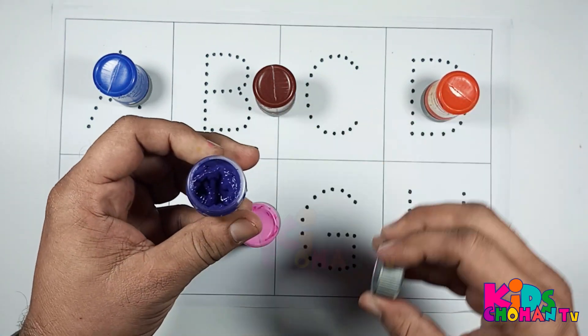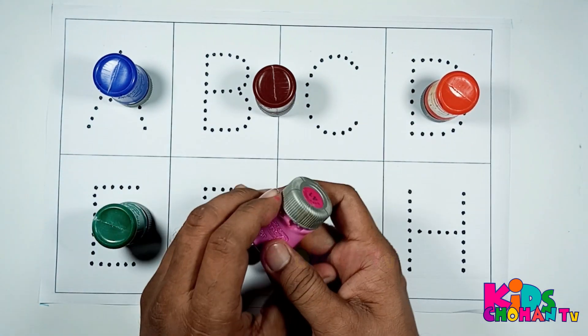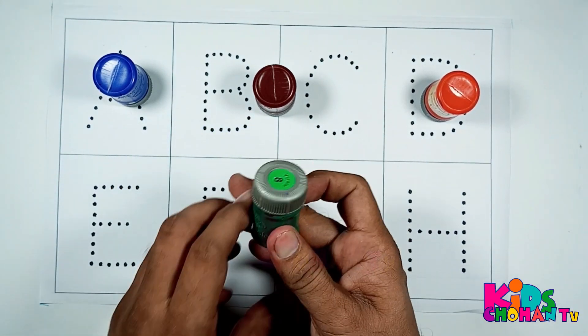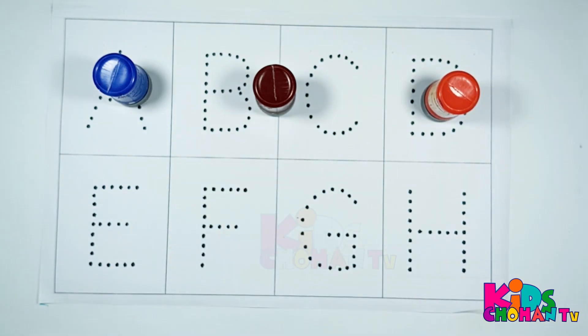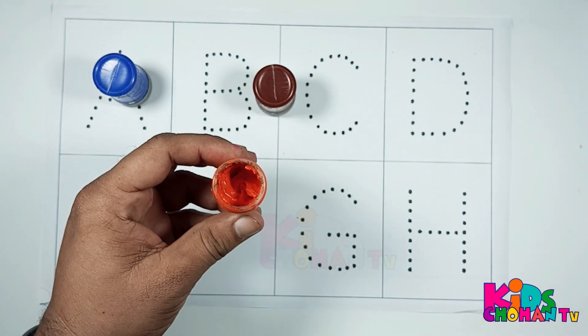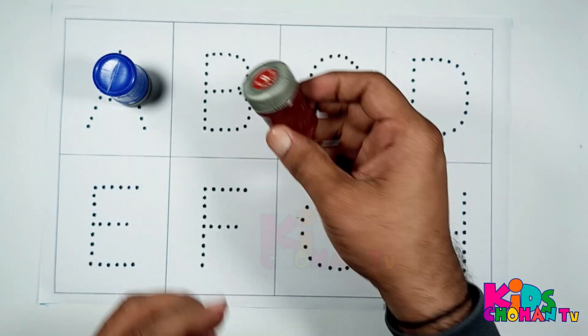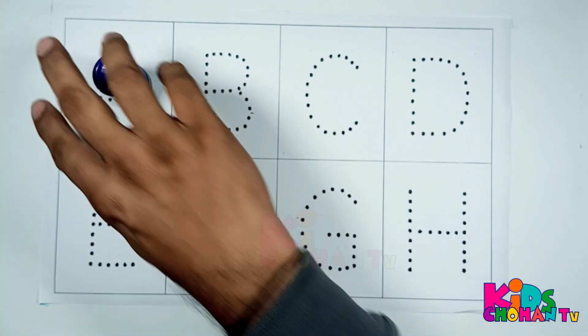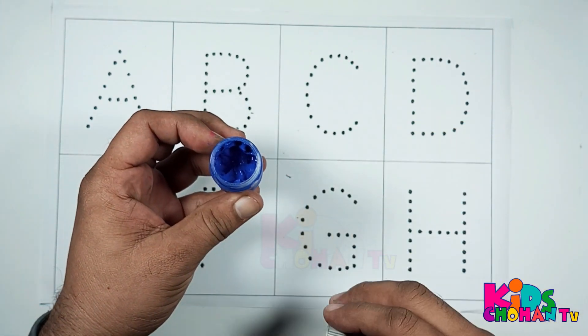This is violet color. Pink color. This is green color. Orange color. This is brown color. And this is blue color.